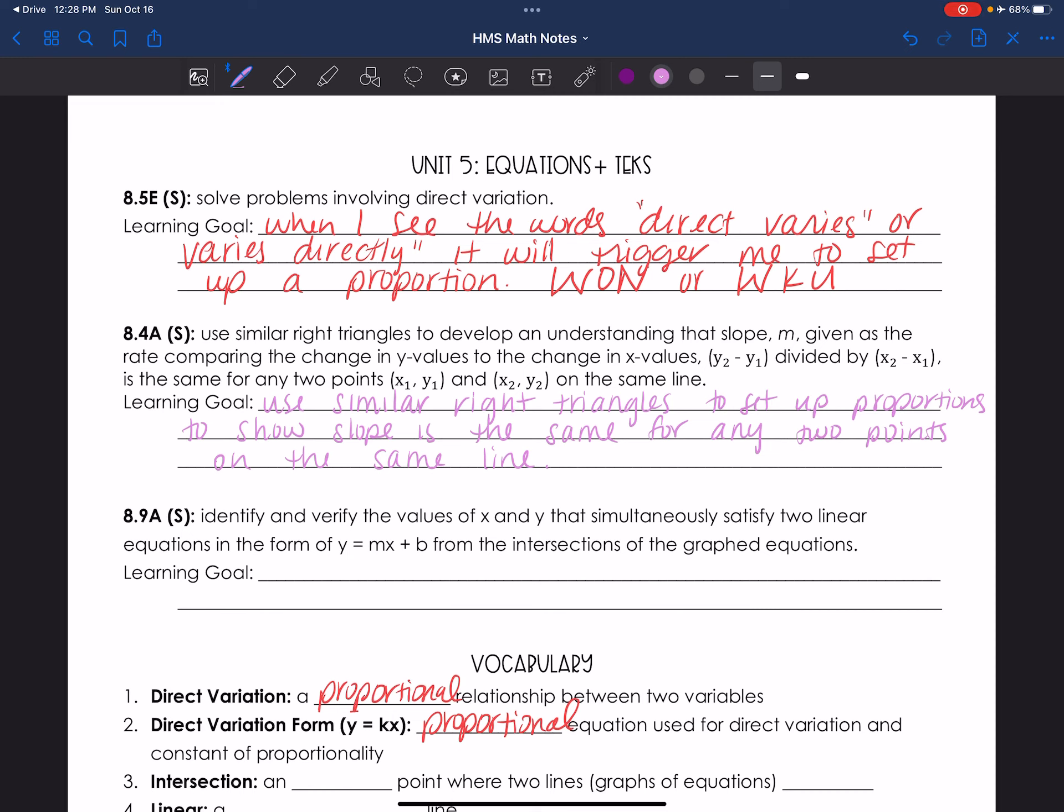So let's get into 8.4a. I have already written it out for you just because it is a lot to write out. But let me read it out loud just so you can follow along. So you're using your eyes and you're listening with your ears. 8.4a: Use similar right triangles to develop an understanding that slope, m, given as a rate comparing the change in y values to the change in x values, y2 minus y1 over x2 minus x1, is the same for any two points on the same line.